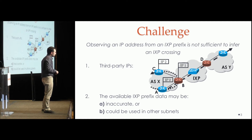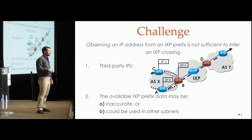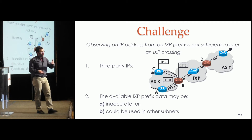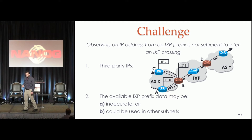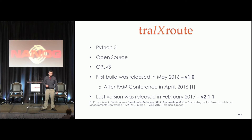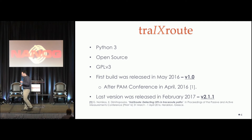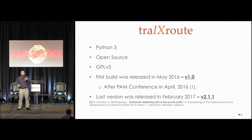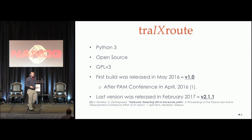Some other reasons might be inaccuracies in the IXP prefix data. And what about if these prefixes are used in other operational subnets? So in this work, we propose a new tool, TraceRoute, on how to detect and identify if and at which hops in the Traceroute path we have crossed an Internet Exchange Point.